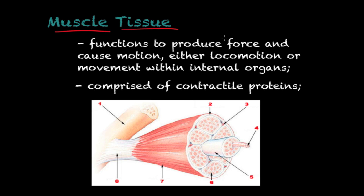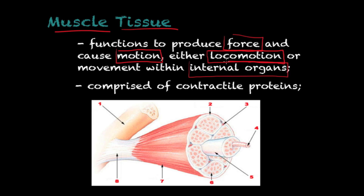One of the things you need to know about muscle tissue is that it functions to produce force and motion. In other words, this is the tissue that will cause movement in your body — either locomotion, meaning if you need to walk you have to rely on tissue that will produce force and movement in order for you to do so — and that is muscle tissue — or movement within internal organs.